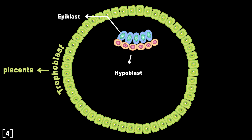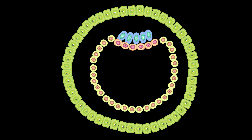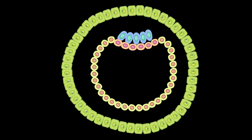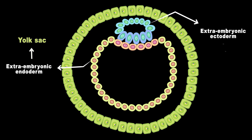Extraembryonic endoderm forms first. When cells of the hypoblast migrate outwards, these migratory hypoblast cells form the extraembryonic endoderm. The extraembryonic endoderm then differentiates into structures like the primary yolk sac, which serves as the embryo's first source of nutrition. Extraembryonic ectoderm forms by migrating epiblast cells outward and making the amniotic cavity. These cells develop into structures like the amnion and chorion that surround the embryo.